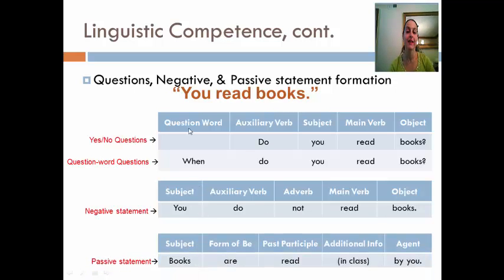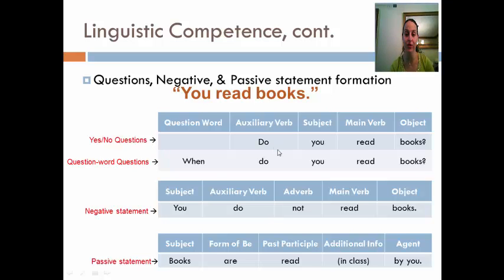To create a passive statement, you take the direct object 'books,' use the auxiliary verb 'be,' put it in front of the main verb 'read,' and then add 'by you' in front of the previous subject — giving us 'Books are read by you.' This knowledge is important because it helps you describe to your ELL students how to rearrange words in sentences to make each of these different types of statements.